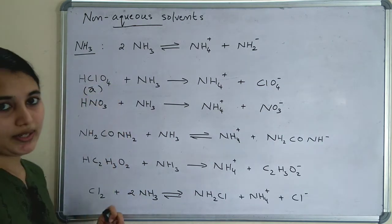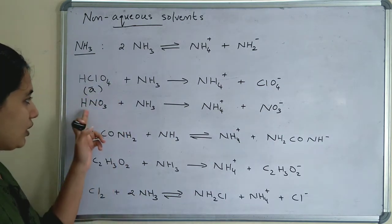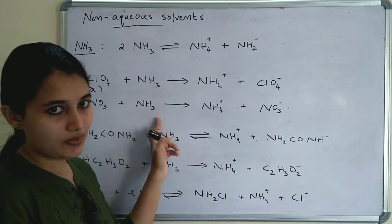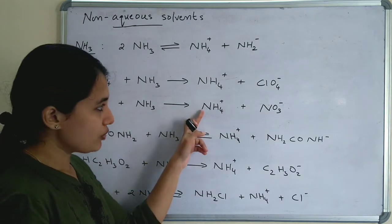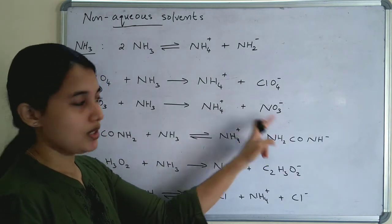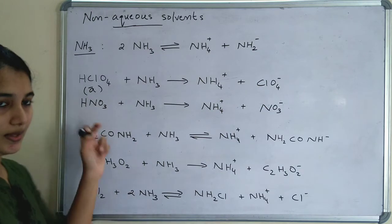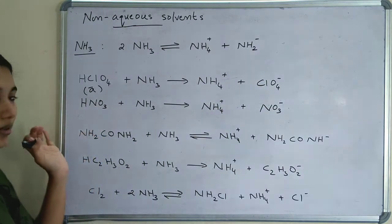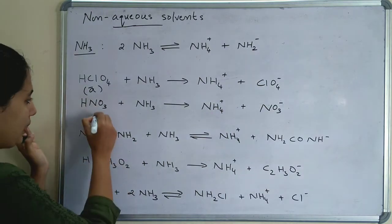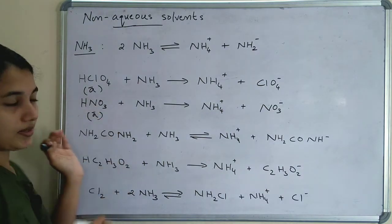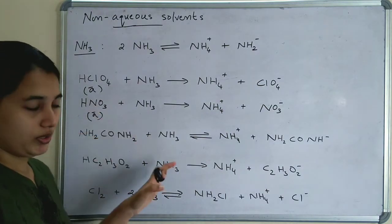HNO3 (nitric acid) in ammonia: HNO3 + NH3 → NH4⁺ + NO3⁻. Here also it is an acid — HNO3 is a strong acid in ammonia.